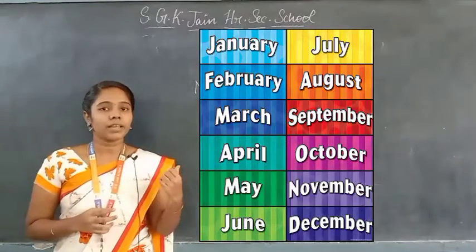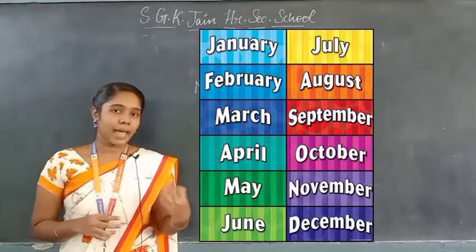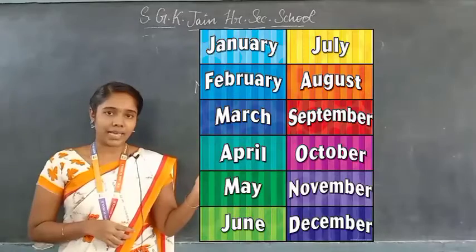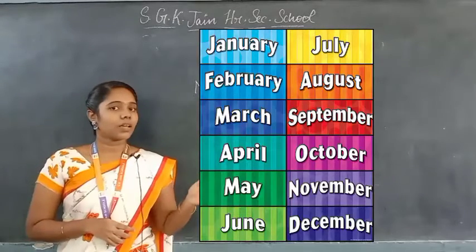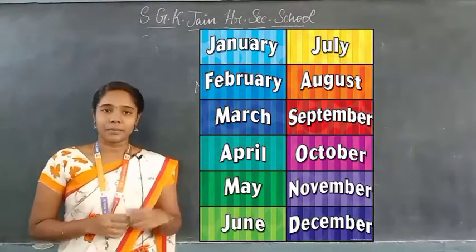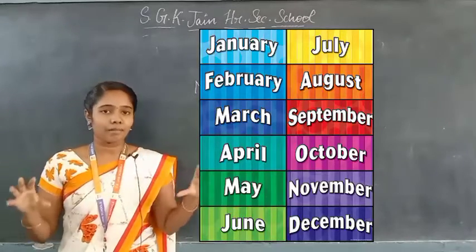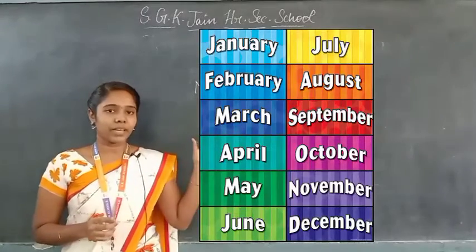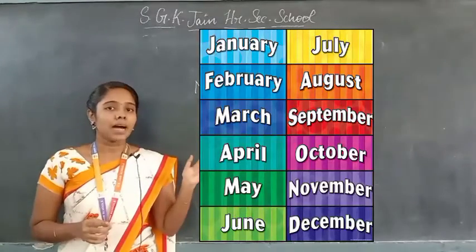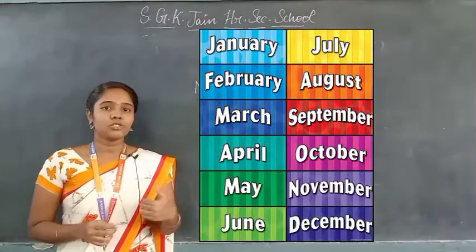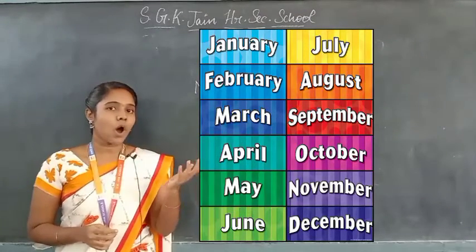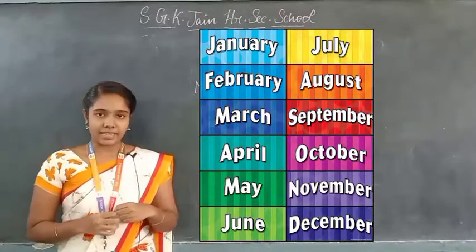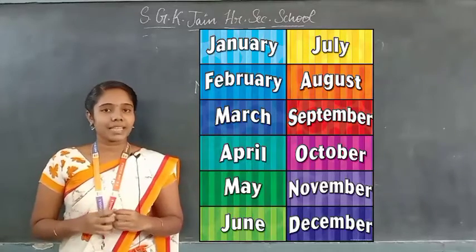The 12 months of the year are: January, February, March, April, May, June, July, August, September, October, November, and December.